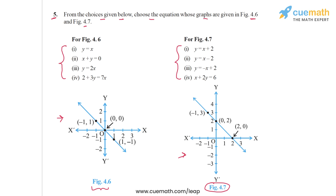This problem is actually quite simple. From the graph of 4.6, we are given three points: minus 1 comma 1, we have 0 comma 0, and we have 1 comma minus 1. We just need to check which of the four equations these points satisfy. So let's take the first point, which is minus 1 comma 1. That means x is equal to minus 1 and y is equal to 1.